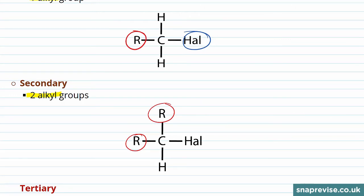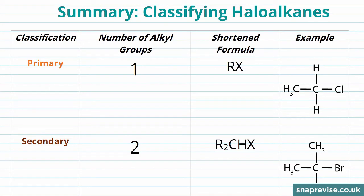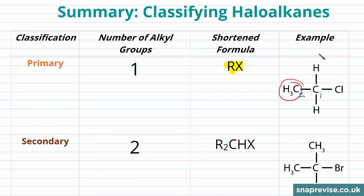Following this trend, with our tertiary haloalkanes we have three alkyl groups attached to that carbon — that's one, two, three alkyl groups. In our primary haloalkanes we have one alkyl group bonded to the carbon attached to our halogen atom, so the shortened formula will be RCH2X. We have an example here — this molecule is chloroethane. The halogen atom is chlorine, and the longest carbon chain is two carbons long, meaning the stem is 'eth'. We know this is a haloalkane as the compound is completely saturated.